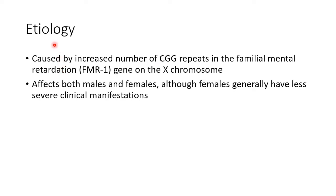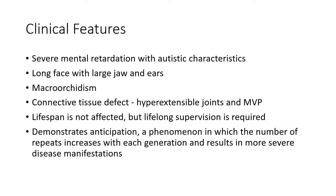Fragile X syndrome is caused by an increased number of CGG repeats in the FMR1 (familial mental retardation 1) gene on the X chromosome. Since the X chromosome is present in both males and females, Fragile X syndrome affects both, but females generally have less severe clinical manifestations.